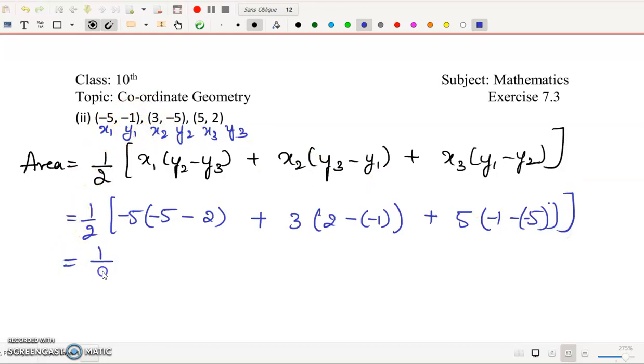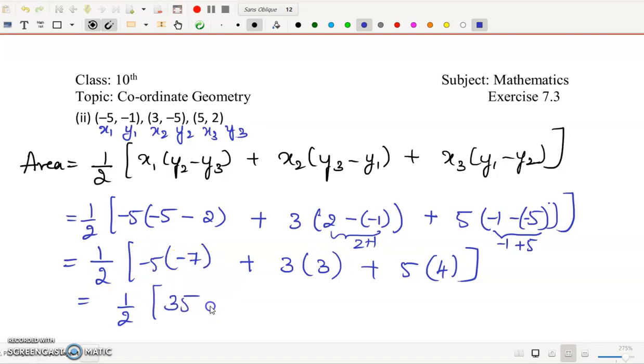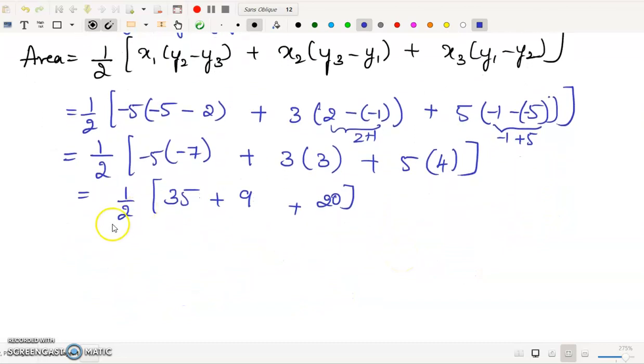It is half into minus 5 into (minus 5 minus 2 is minus 7), plus 3 into (2 plus 1 is 3), plus 5 into (minus 1 plus 5 is 4). So it is 1 by 2, minus into minus is plus, 35 plus 9 plus 20. It is 1 by 2 into 64, which is 32 square units.